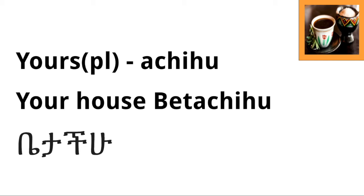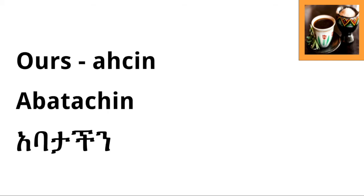Next we have 'ours.' The possessive suffix ending for the pronoun 'we' is '-achin.' So if we wanted to say 'our father,' father in Amharic is 'abat,' and our father becomes 'abatachin.' This is actually a phrase you'll hear in church, for example when referring to God — 'abatachin,' our father.